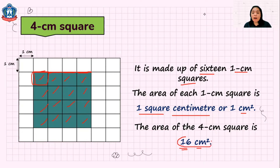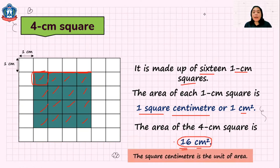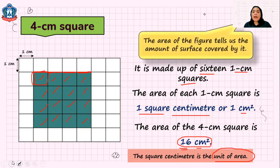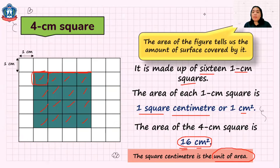So this is the area of our square. The square centimeter is what we call our unit of area. The unit of area depends on the measurement — you can use centimeters, meters, or millimeters. The area of a figure tells us the amount of surface covered by it. So when we say area of a figure, it means the number of squares covering the whole figure.